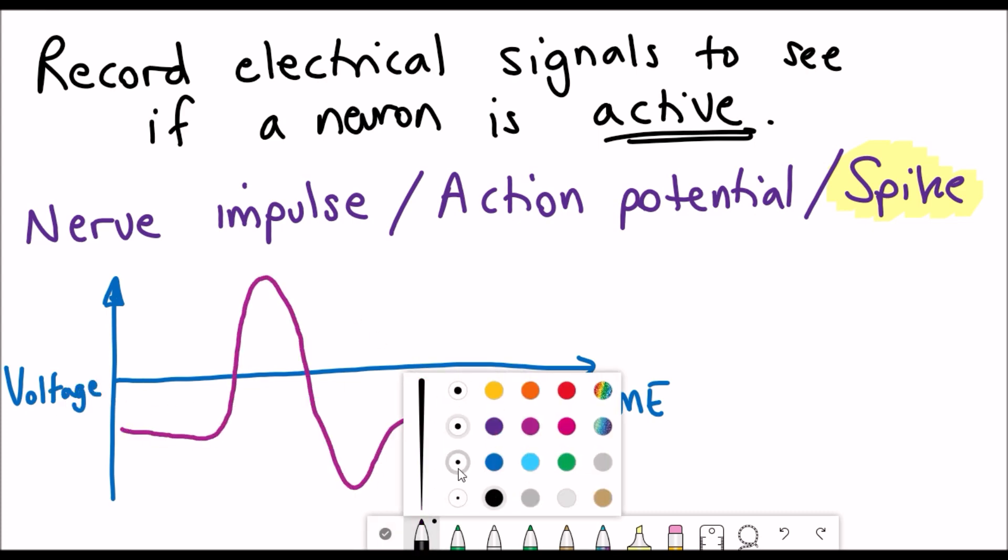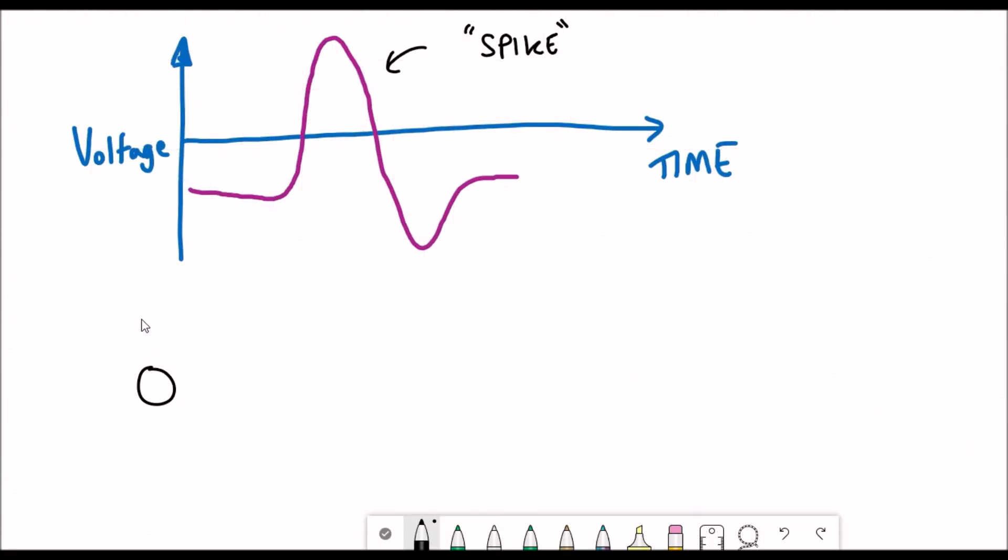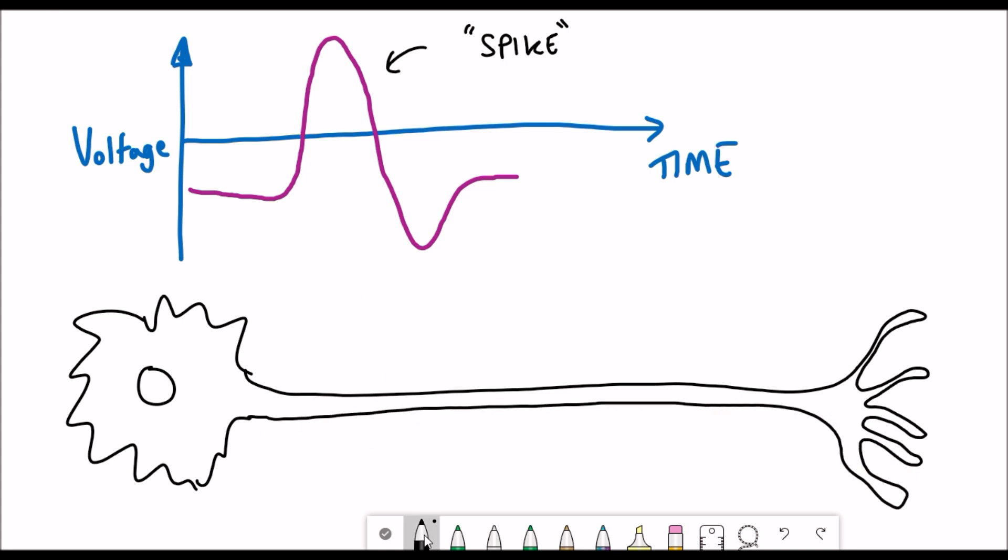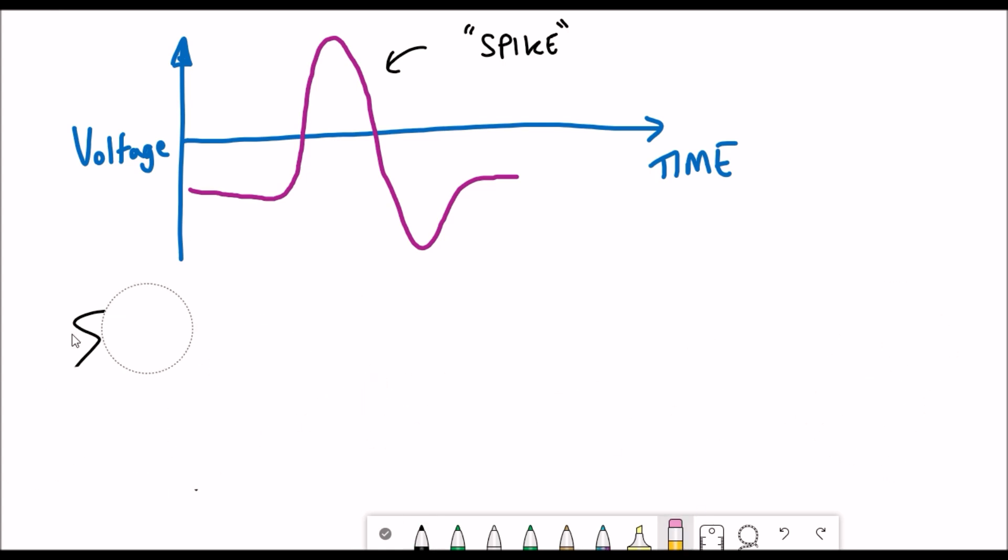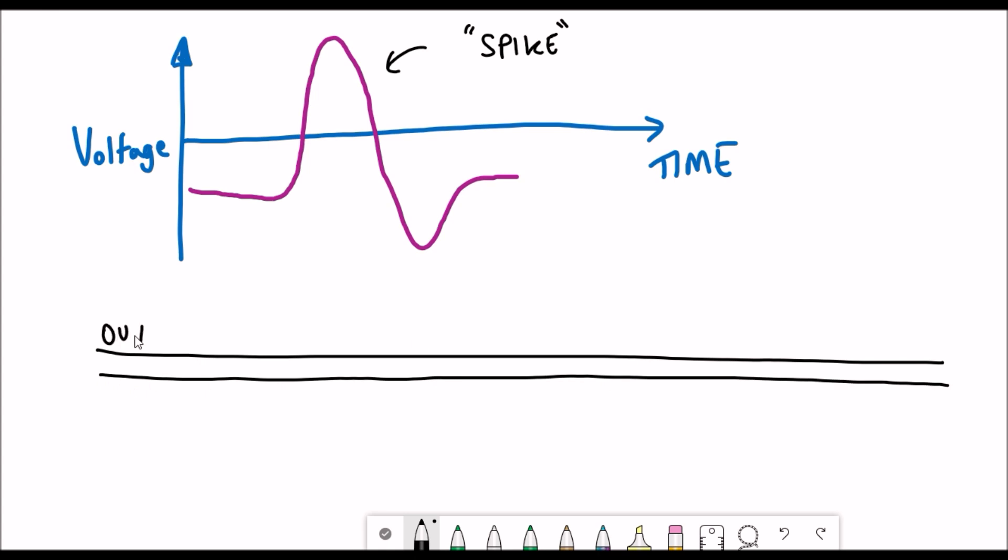During one of these spikes you see the membrane potential become positive and the voltage go up and this happens because of the changes in flux between the ions across the membrane of the neuron.